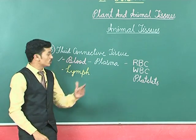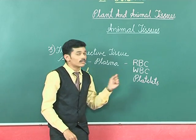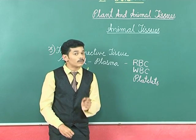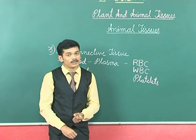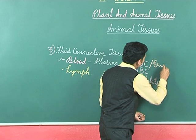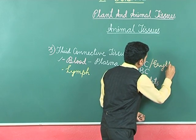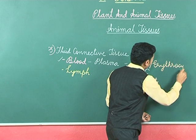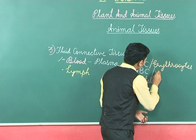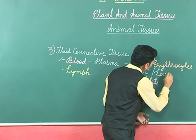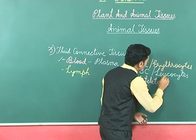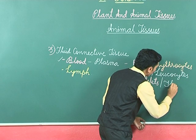This connective tissue has plasma as the matrix, and there are three cellular components: RBC — red blood cells, WBC — white blood cells, and platelets. RBCs are also called erythrocytes, where 'erythro' means red. WBCs are also called leukocytes, where 'leuco' means white. Platelets are also called thrombocytes.